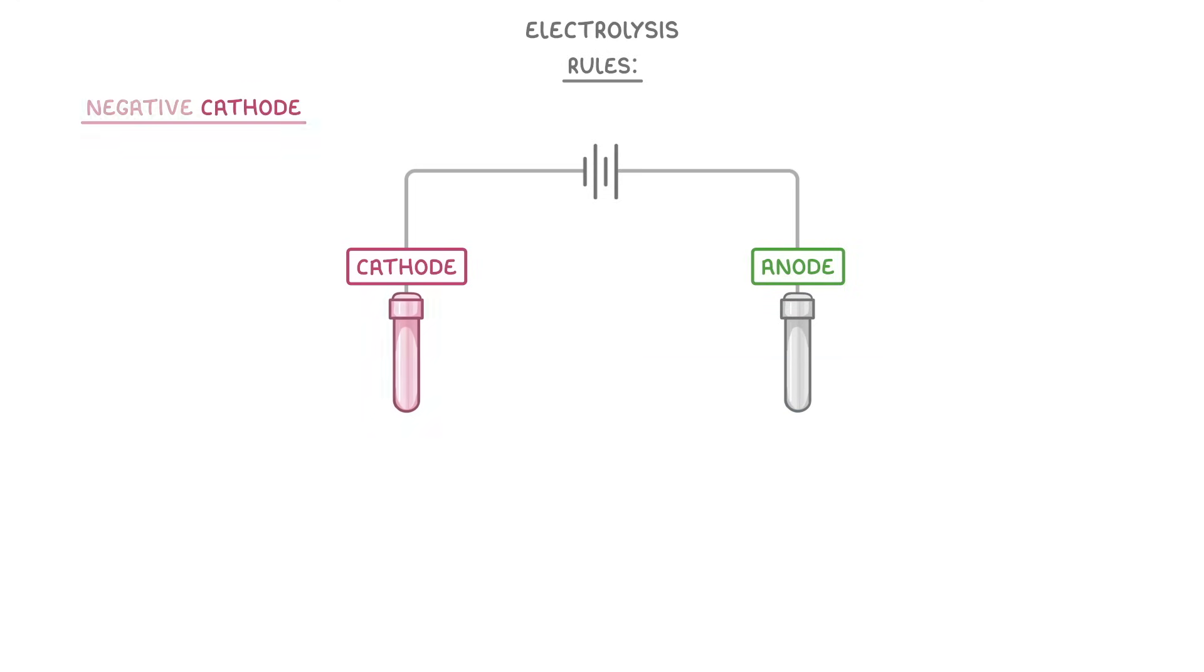The cathode, which is negative, will attract the positive ions, so the metal ion from the compound and the hydrogen ion from the water. But importantly, it will only discharge one of these ions, and we have to be able to tell which one it is. The rule is that the ion of the least reactive element will be discharged.